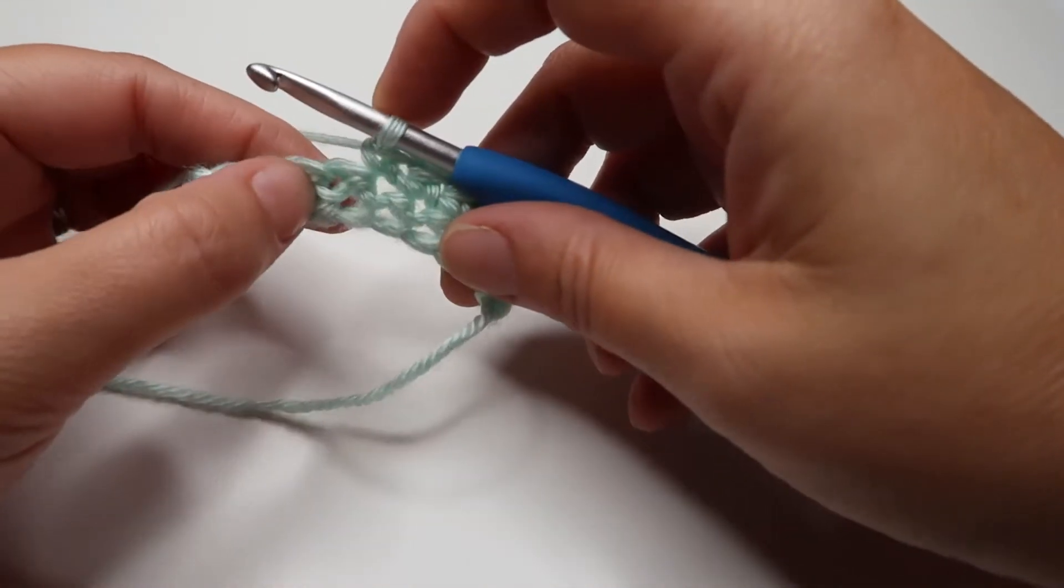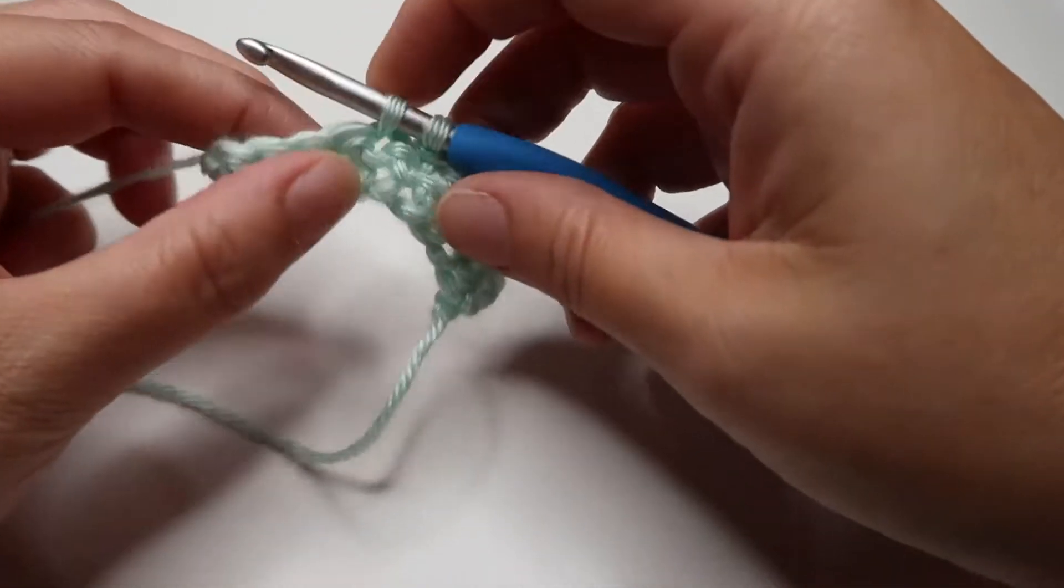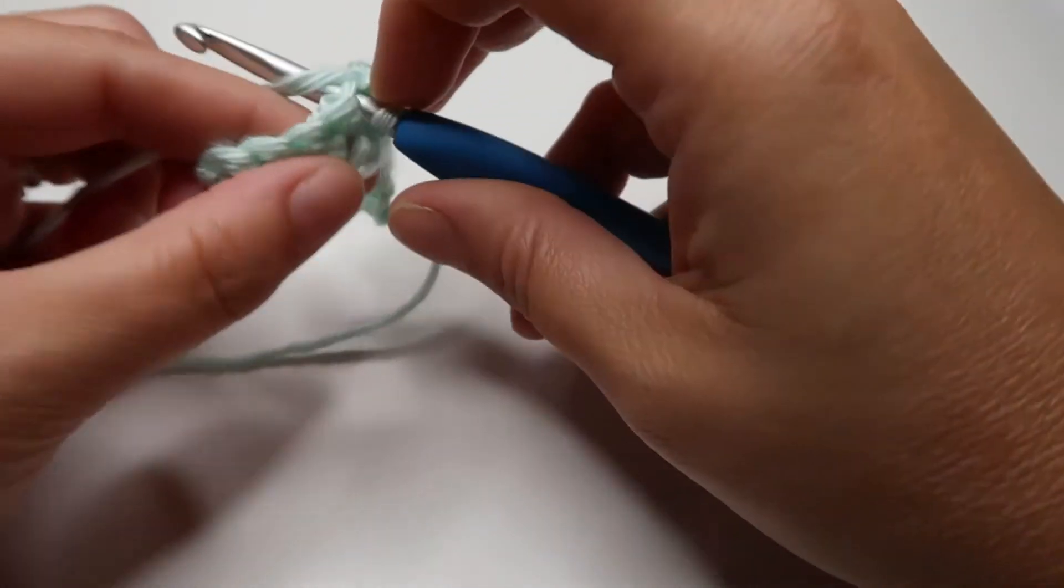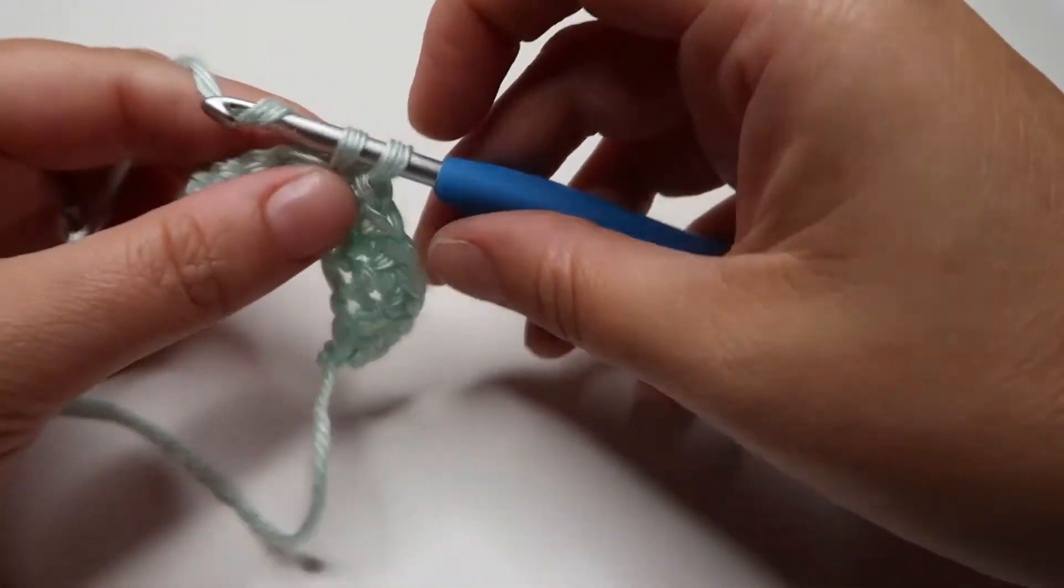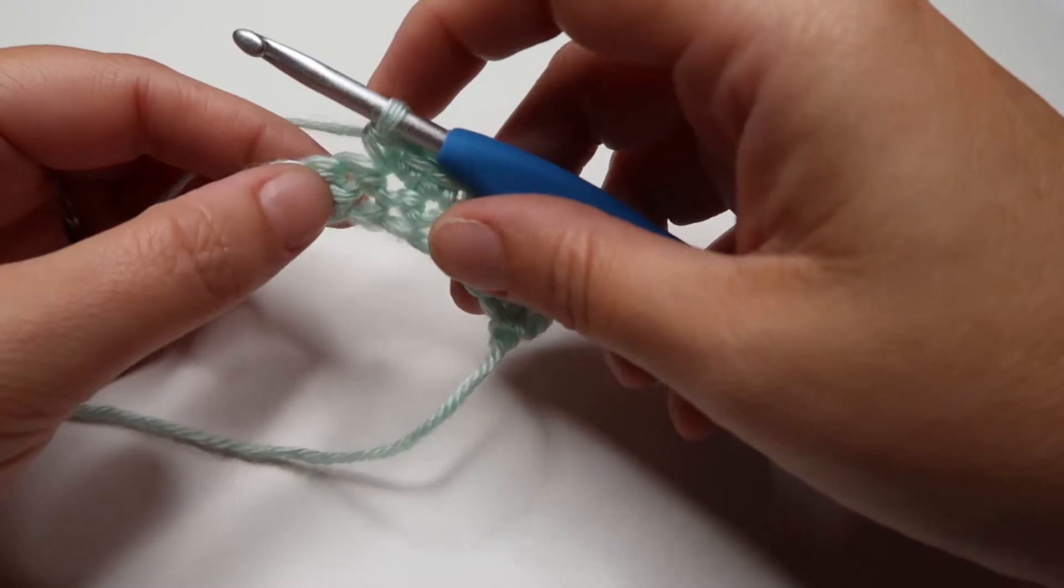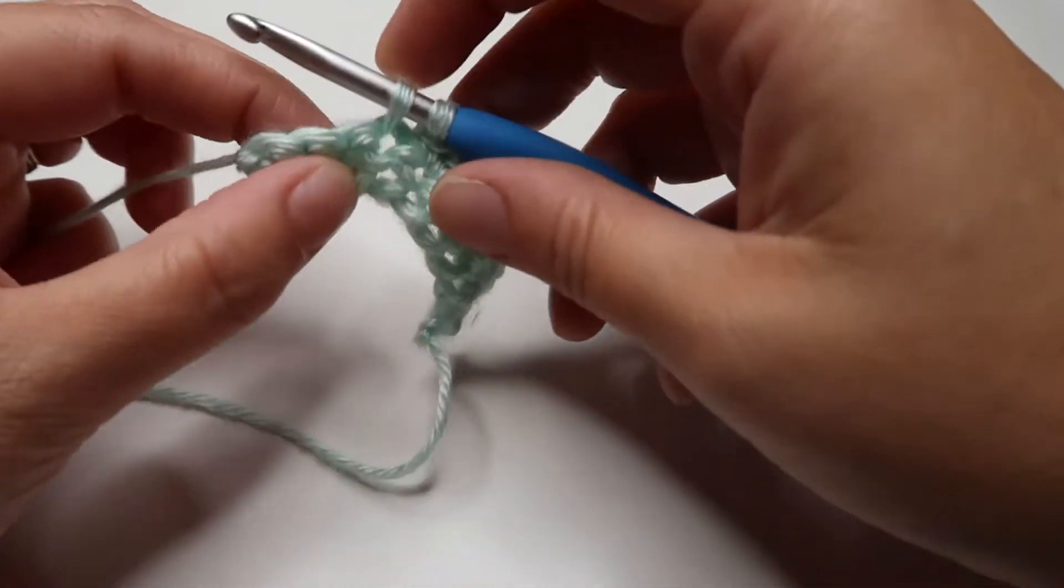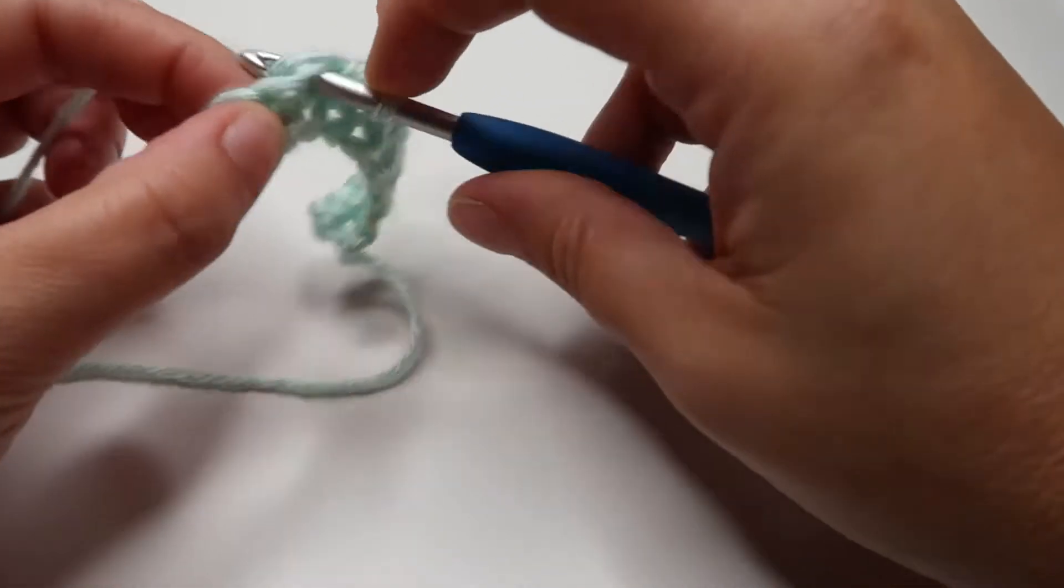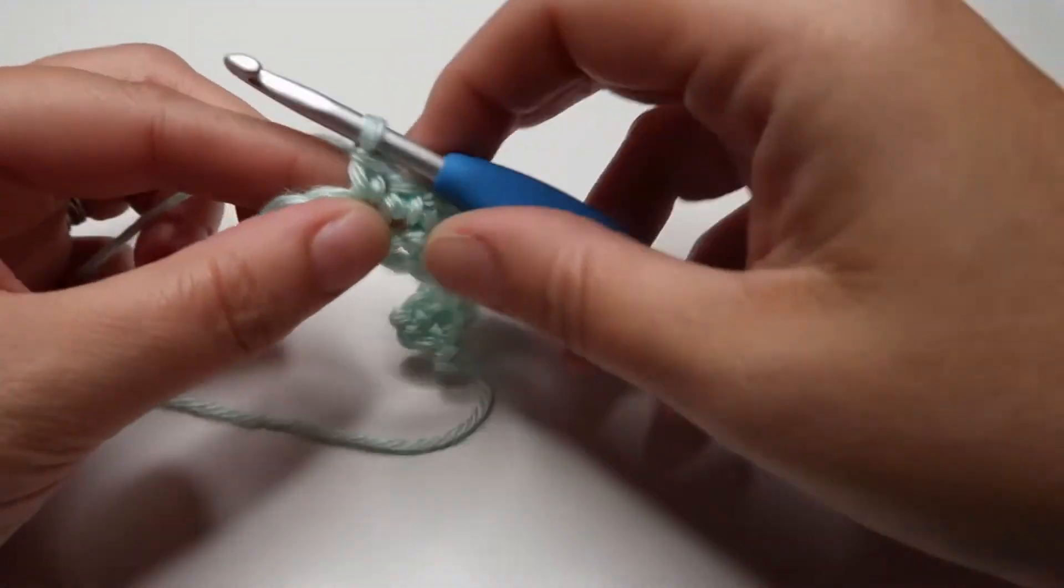And then we'll do our next increase. It'll be two in the next stitch. We'll do two more regular single crochets, and we'll do an increase in the next.